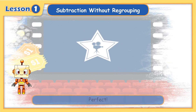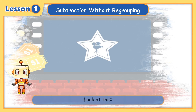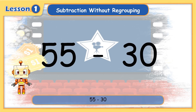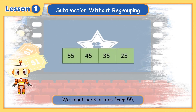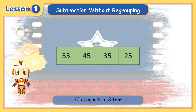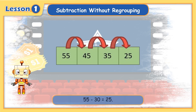Perfect! Now we're going to subtract tens from a number. Look at this: 55 minus 30. We count back in tens from 55. 30 is equal to 3 tens. 45, 35, 25. 55 minus 30 equals 25.